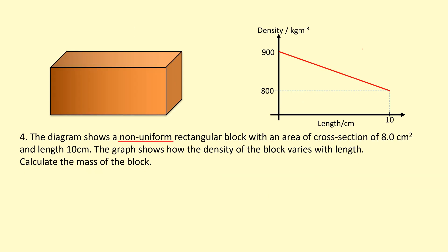The diagram shows a non-uniform rectangular block. The word non-uniform here means that the mass is not evenly spread out, so the density is changing across the object. The cross-section area of this block is 8 centimeters squared, and the length is 10 centimeters. The graph shows how the density of the block varies with length. Calculate the mass of the block.